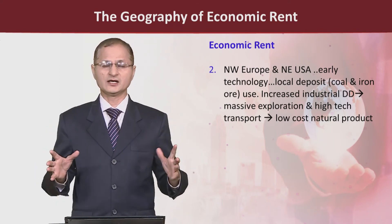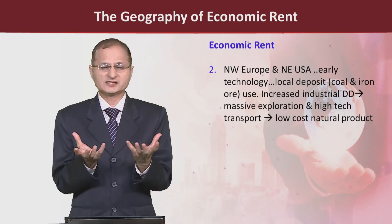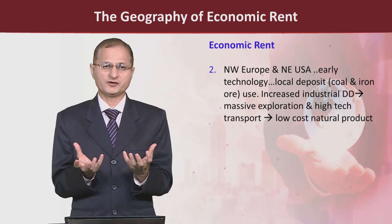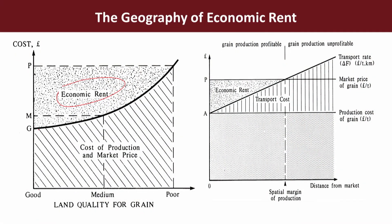Natural resource-based countries, as they increase production due to technological development, see the prices of their products fall, reducing their rent and profit. On the other hand, technology producers see their rent increase. Looking at the diagram: if prices are above G, there is no rent; above M, a marginal rent is received; but if they are above P, the market price, rent increases significantly.